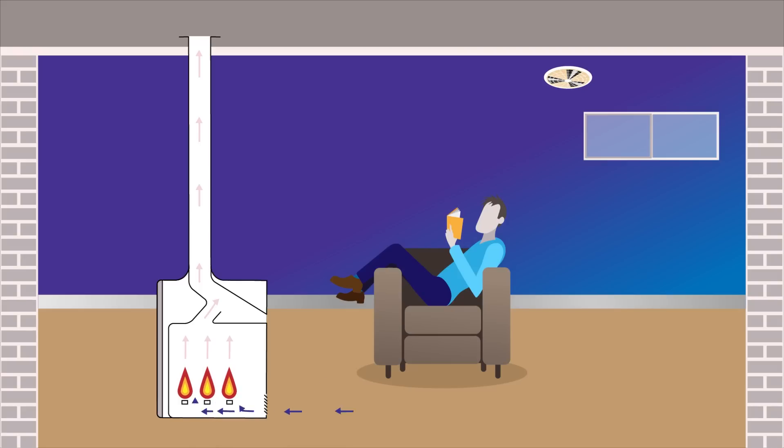This diagram shows the correct operation of open flue heaters. The arrows show how air is drawn into the appliance from the room for combustion. The products of combustion exit via the flue and into the atmosphere.